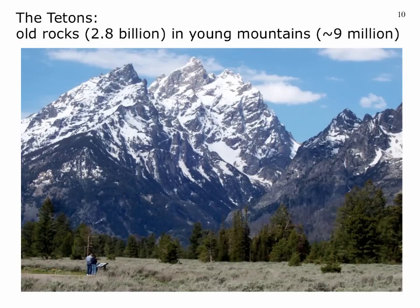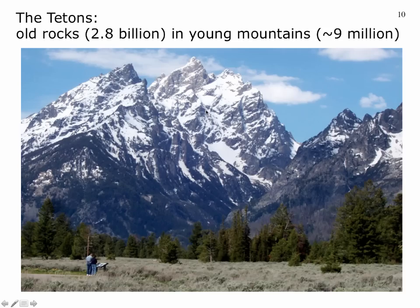The big story at Grand Teton is that we have very old rocks — 2.8 billion years in age, about half the Earth's age — yet young mountains. The mountains we see here were formed over the last nine million years, which is fairly short for mountain ranges. The types of tectonic action that produced them were related to the second type of mountain building: pull-apart extensional tectonics.